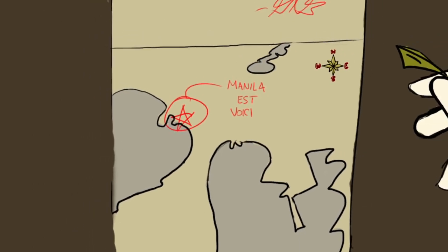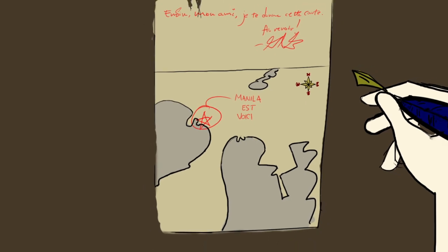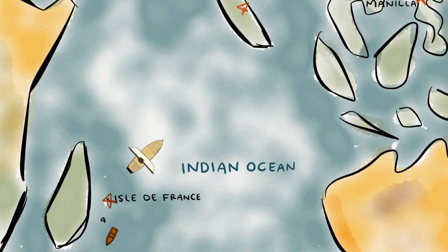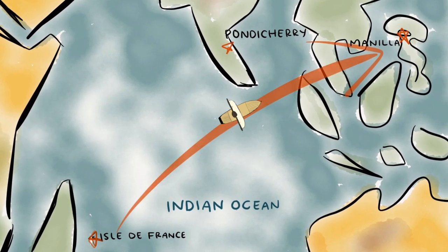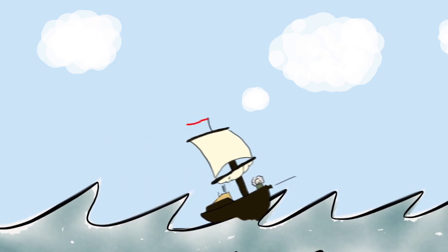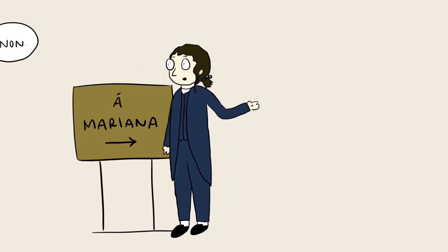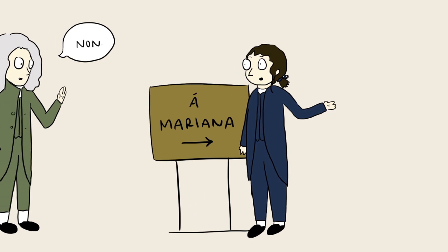In May, he wrote to the Academy of Science to inform them of his plan and to ask for diplomatic letters of recommendation. As his message sailed home, he sailed to the Philippines and arrived in August. It was then that Le Gentil enjoyed one of the only pieces of good luck in his journey.